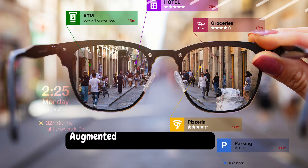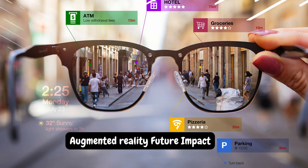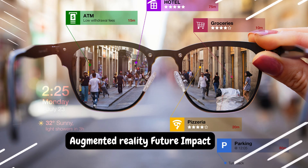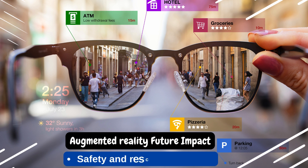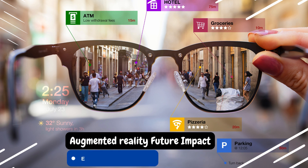In the future, augmented reality will have an impact on the following areas. 1. Safety and rescue operations. For example, it is possible to provide 3D images of an area where a rescue mission is to take place. 2. Entertainment. For example, AR takes users into a virtual environment where it is possible to interact with the environment.